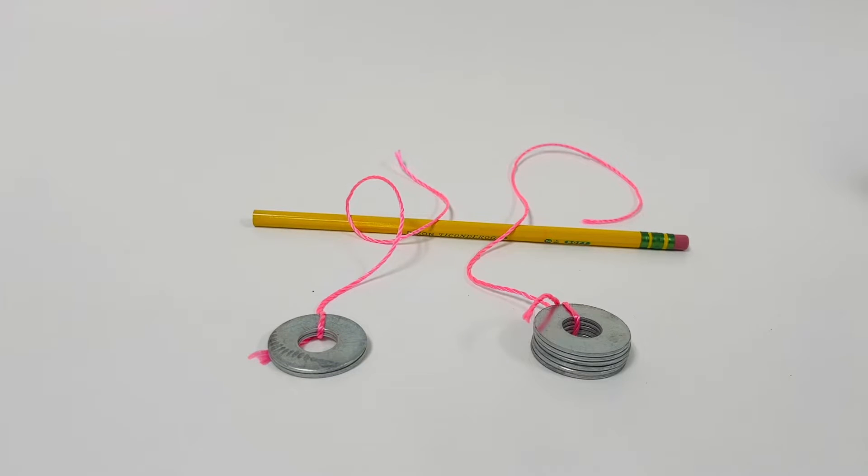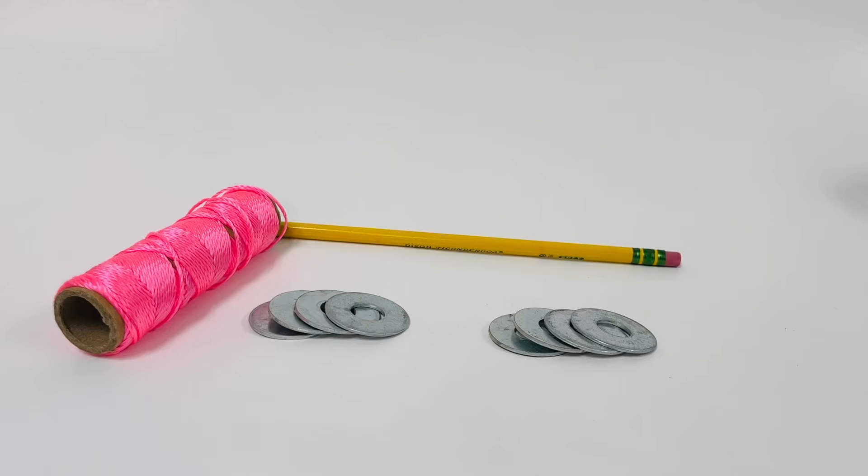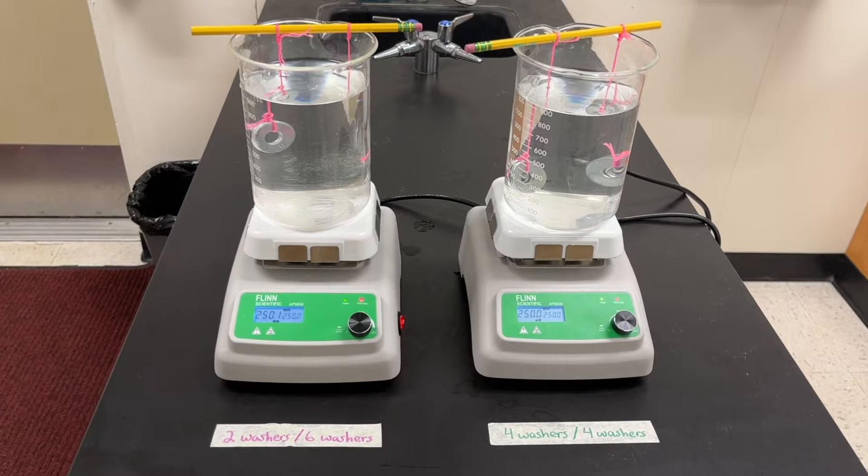You just tie each group of washers to the pencil with a little bit of space in between them, as you'll see here in the video. And then just repeat that for the two sets of four washers each.